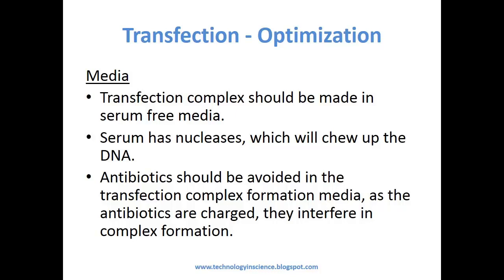Transfection optimization — Media. Culture media plays a major role in transfection efficiency. Cell culture media is mostly supplemented with serum, but for efficient transfection, the transfection complex should be made in serum-free media. The reason is that serum contains nucleases which can degrade the nucleic acids. Antibiotics should also be avoided in the transfection complex formation media, as they are charged and can interfere with complex formation, reducing transfection efficiency. Other charged compounds like polyanions and surfactants such as Pluronic F68, mostly used as an anti-foaming agent, should also be avoided.